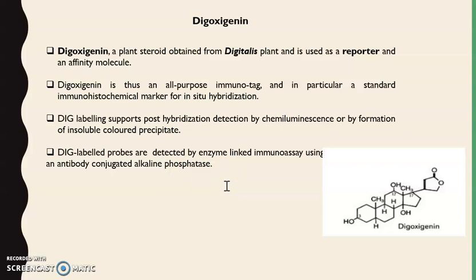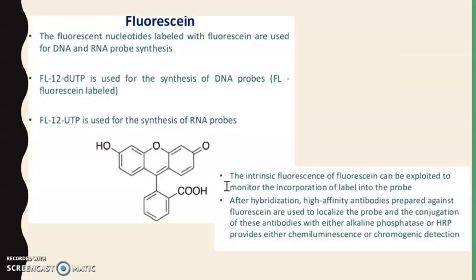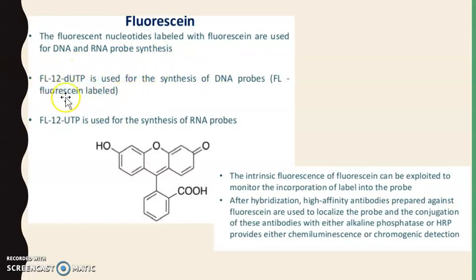Digoxigenin is an important hapten molecule that can be used for indirect non-isotopic labeling methods. Another molecule is fluorescein, which has fluorescence properties used to monitor the incorporation of label into the probe. Here is the structure of this fluorescein molecule, and it can be used for DNA or RNA probe synthesis. Fluorescein-12-dUTP is used, where 12 represents a spacer through which fluorescence is attached to deoxyuridine triphosphate, used to synthesize DNA probes, and FL-12-UTP is used for RNA probe synthesis.